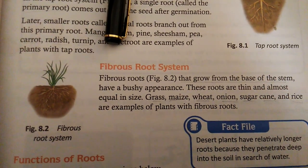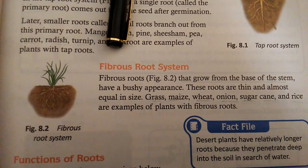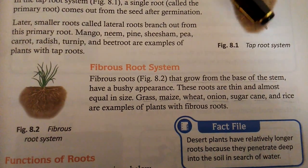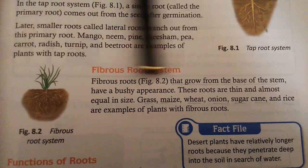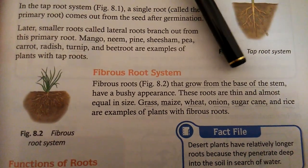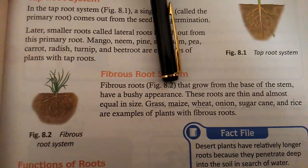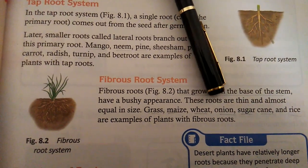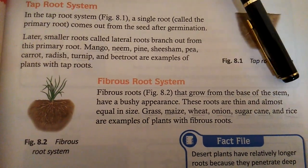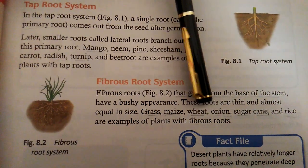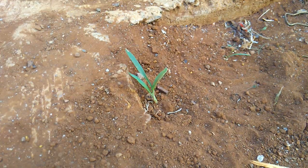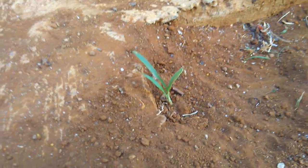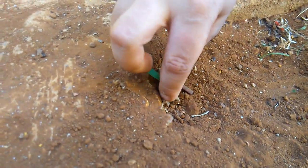Our second type of root system is the fibrous root system. Fibrous roots grow from the base of the stem. These roots are thin and almost equal in size. Grass, maize, wheat, onion, sugarcane, and rice are examples of fibrous root system. You can see here — this is a fibrous root system. Its roots are very weak.